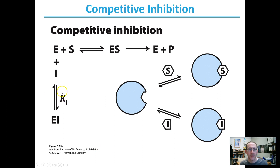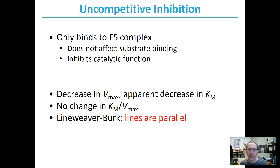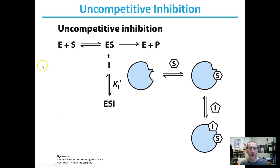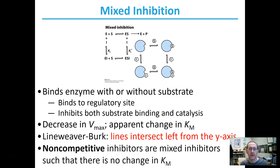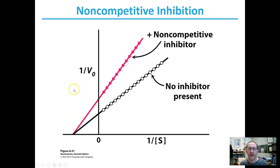If your inhibition is competitive, you only have a KI because the inhibitor only binds to the free enzyme. If it's uncompetitive, you only have a KI-prime because the inhibitor binds only to the enzyme-substrate complex. Structurally, if it binds competitively to the free enzyme, it's binding into the active site — probably similar in shape to the substrate. If it binds only to the enzyme-substrate complex, it's probably not similar to the substrate structure. Mixed inhibition gives both KI and KI-prime, and if they're equivalent, that's non-competitive inhibition.